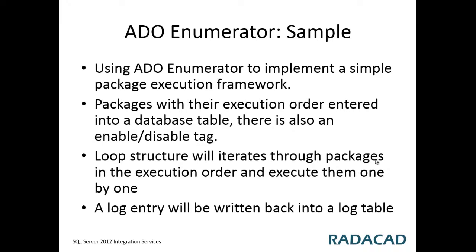For this video's example, the scenario is creating a simple package execution framework using the ADO enumerator. In this framework, we have two tables. One table is a configuration table for package execution, which contains the name of each package, the execution order, and an enable/disable flag. The loop will iterate through packages based on execution order, executing only those that are enabled, one by one.